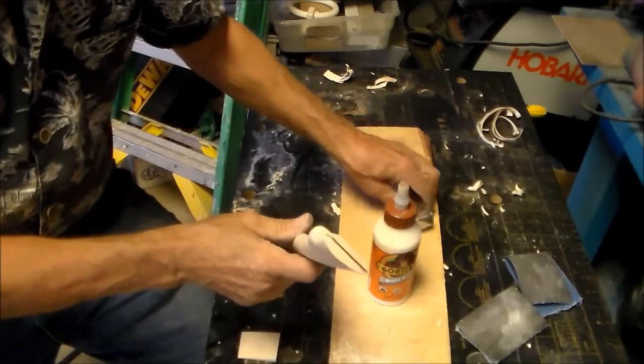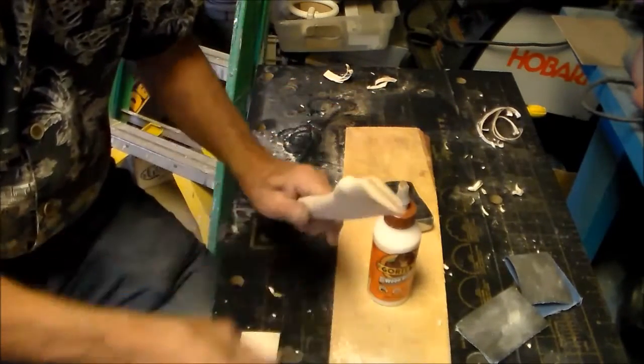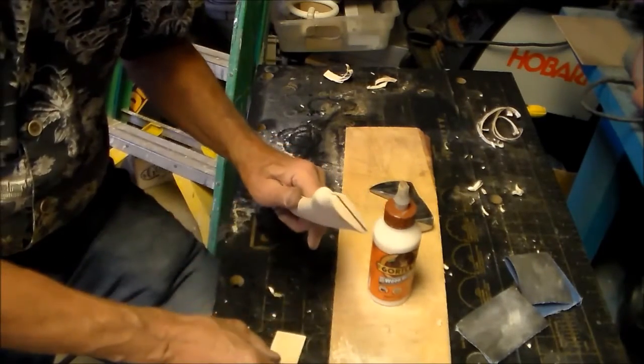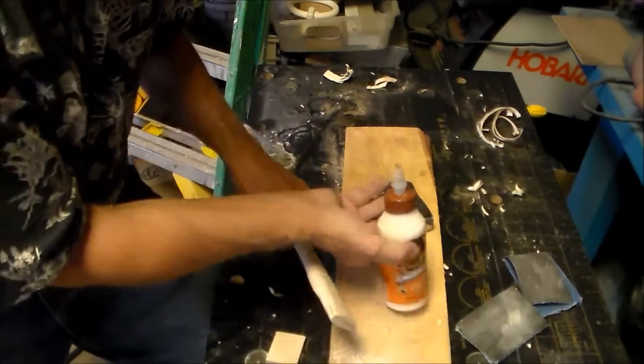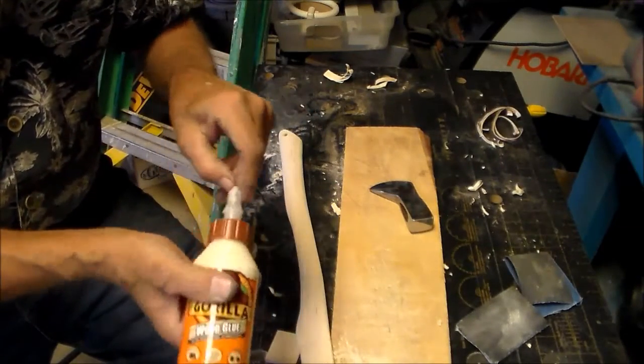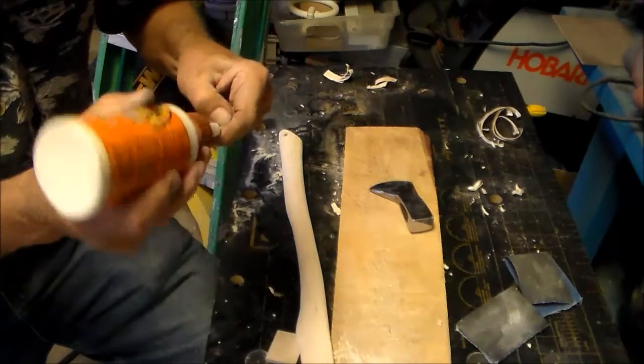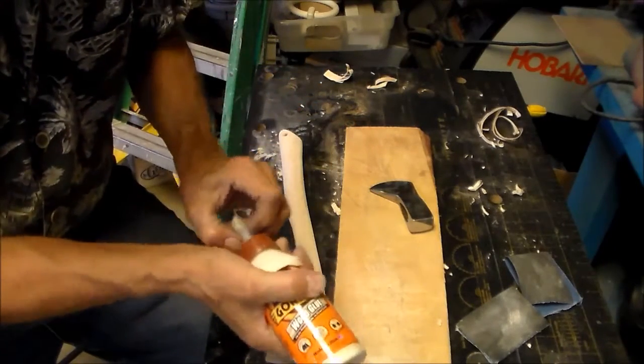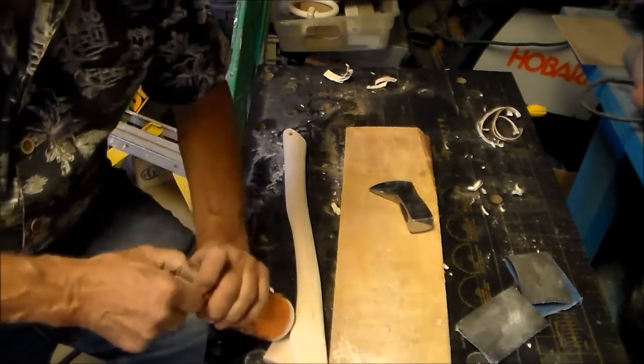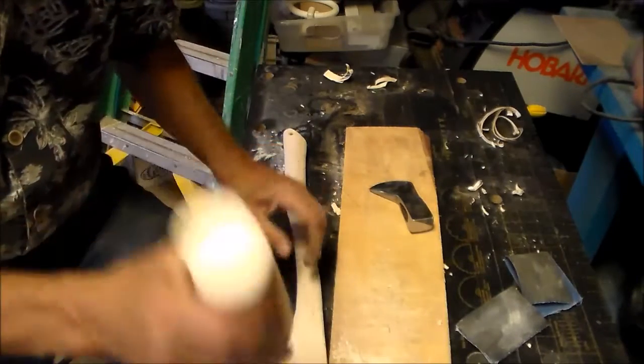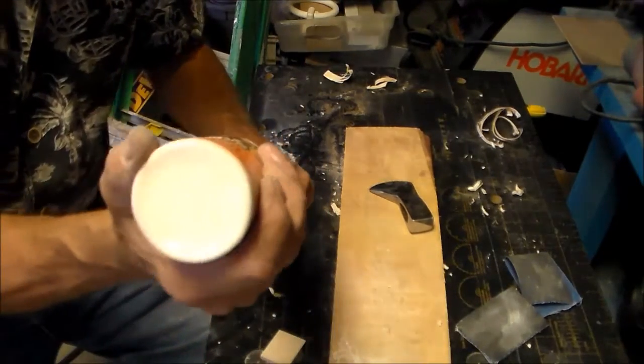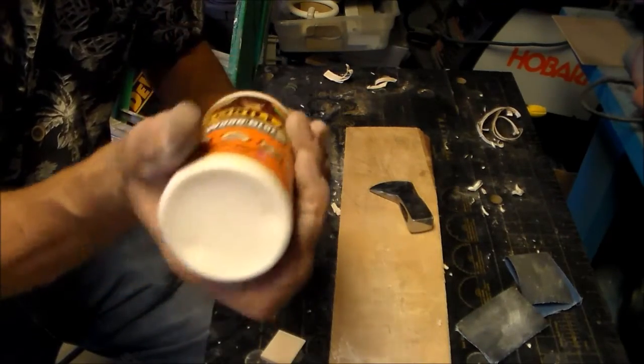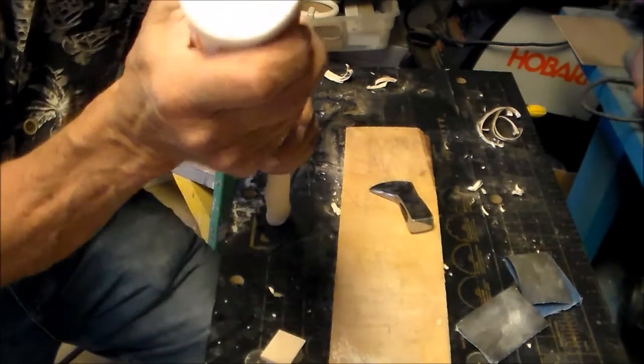Now I'm going to put the axe head on and I'm going to secure it with this wooden wedge and some steel wedges. And what I'm going to do is put some glue on here. This is a waterproof glue. So it's outdoor. So if the axe head gets wet or axe gets wet that shouldn't be loosening because of the glue.